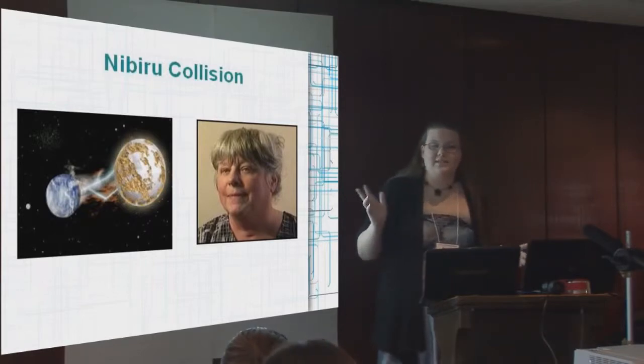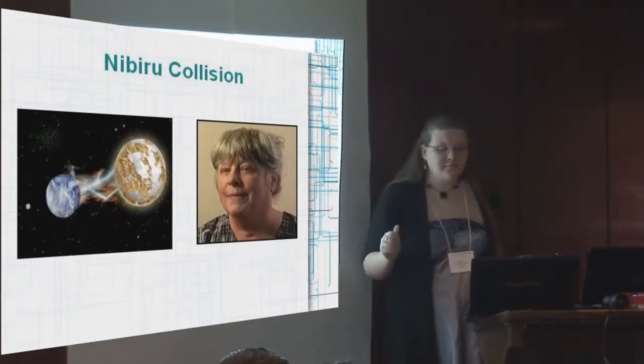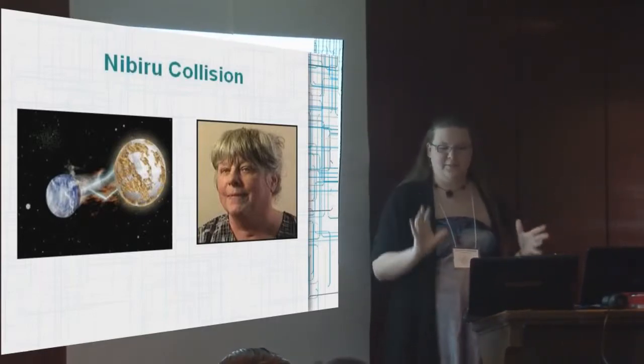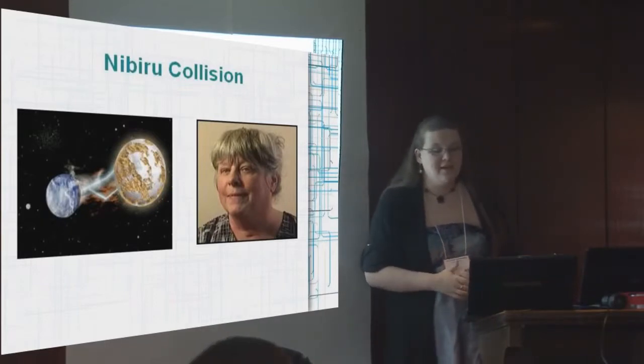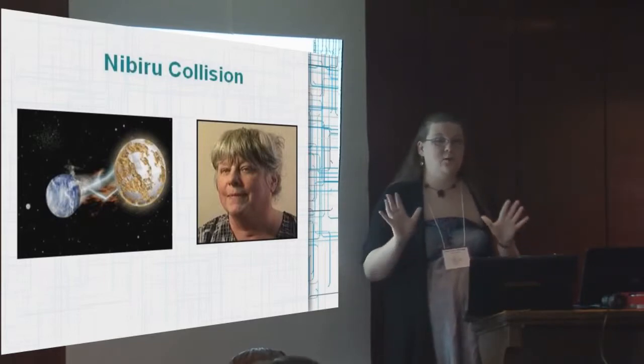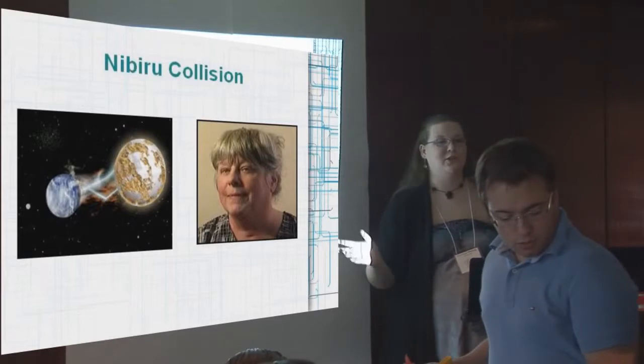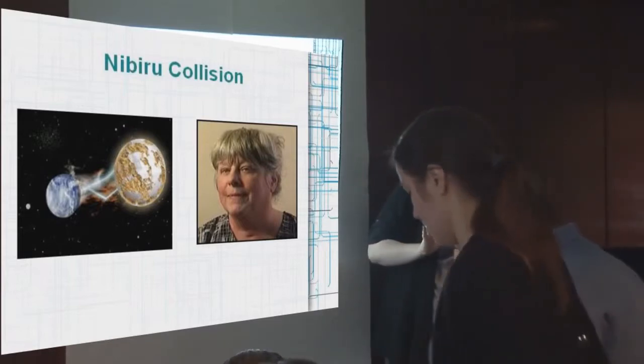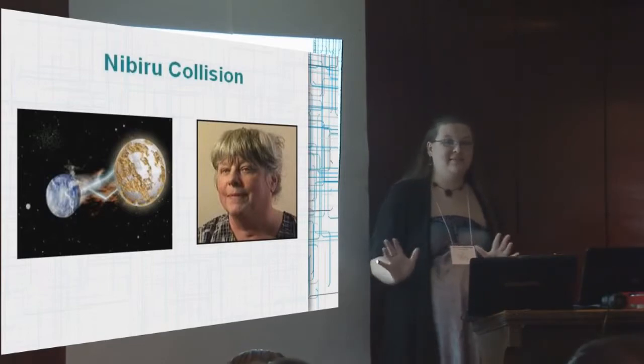So, now that this obviously didn't happen in May 2003, nothing enormous collided with us and reversed our polarity and stopped our rotation and all of these crazy doomsday things that were supposed to happen. Her story now is that, oh, if we told everyone when it was, it would give them the opportunity to impose martial law. And so that would be bad. So we're not going to tell anyone when it is anymore, but it's coming.